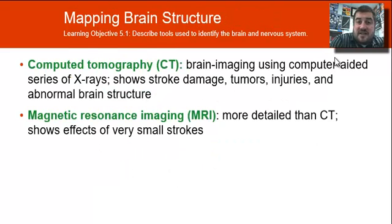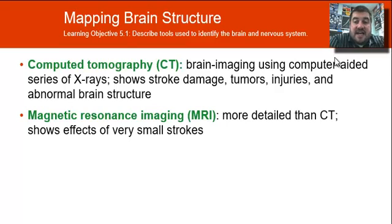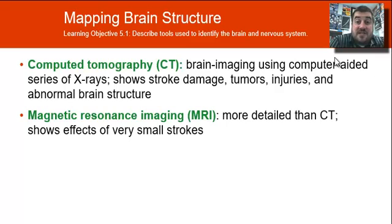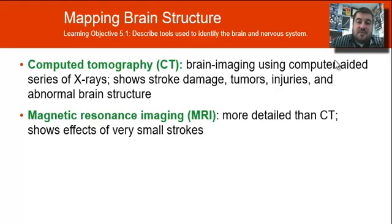There are different ways of mapping the brain. We can do a CT scan, or computed tomography scan, which is a series of x-rays using a computer. It can show stroke damage, tumors, injuries, head trauma, and abnormal brain structure. There's also an MRI, which is more detailed than a CT and can show the effects of very small strokes.